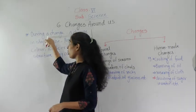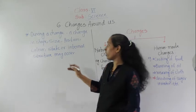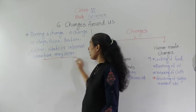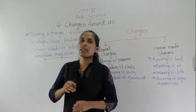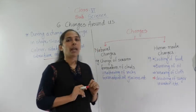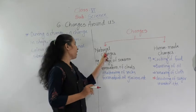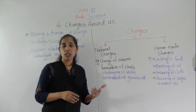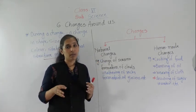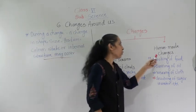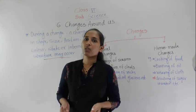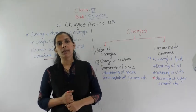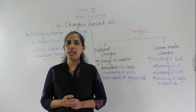So today we have discussed about change and which things happen during a change. A change in shape, size, position, color, state, or internal structure may occur. There are two types of change: natural changes and human-made changes. Natural changes happen naturally and cannot be controlled by human beings. Human-made changes occur due to the efforts or activities of human beings. That is all for today. We will discuss the next point in the next video. Thank you.